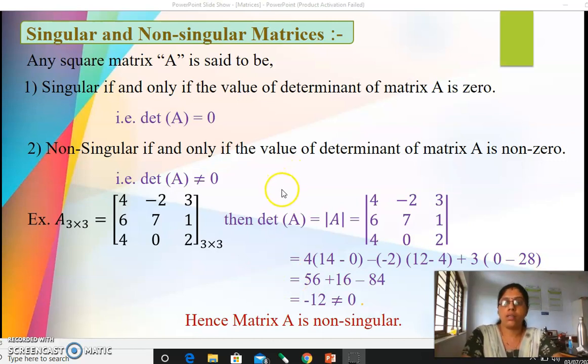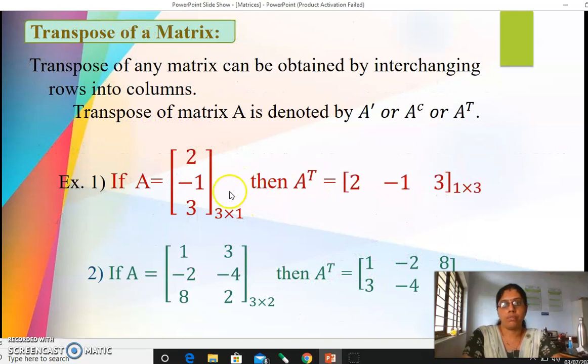Now let's see the next one, that is transpose of a matrix. Transpose of any matrix can be obtained by just interchanging rows into columns. It's a very simple concept, you just have to interchange rows and columns. How to write that transpose, let us see.